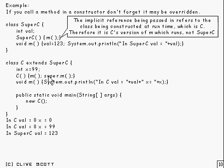Then, just for good measure, we call super.m. So that calls the M in the super class, which is that one there. That will set val equal to 123 now and print out 'In SuperC val=' and the value 123, which is what you get there.